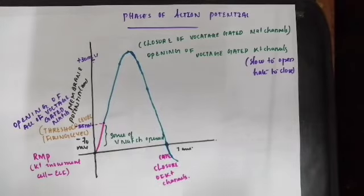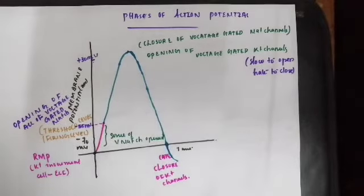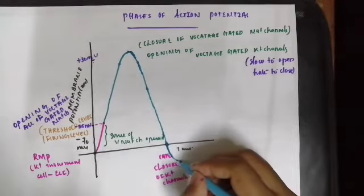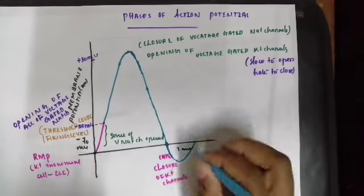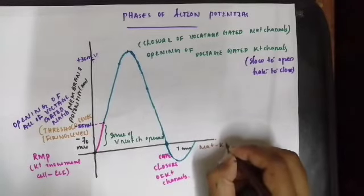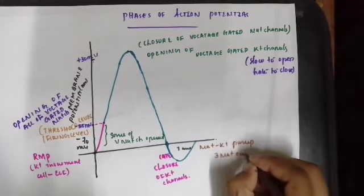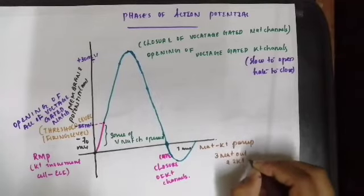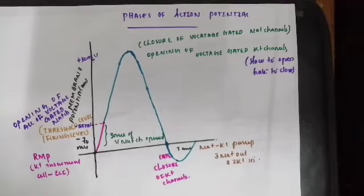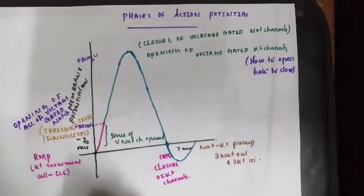Because of late closure of potassium channels, potassium efflux from the cell continues and the potential becomes more negative. The cell again comes back to its resting membrane potential with the help of the sodium-potassium pump. The sodium-potassium pump pumps three sodium out and two potassium in, restoring the membrane potential back to minus 70 millivolt.